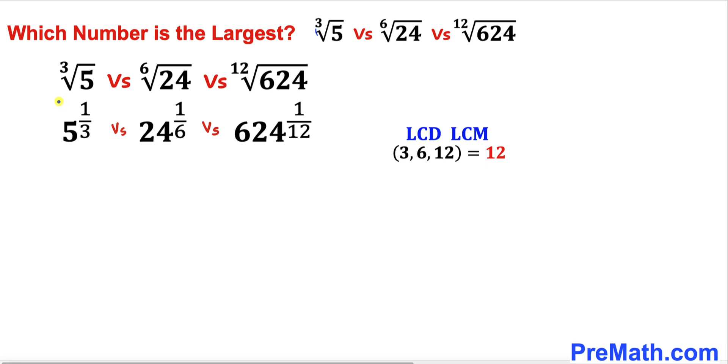Now let's take a power of 12 on all of these numbers. Power 12 over here, power 12 over here, and power 12 over here. The 12 is this least common denominator.